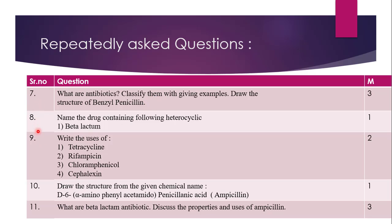Question 8 is: Name the drug containing the following heterocycle. The heterocycle is the beta-lactam ring. So, beta-lactam ring-containing antibiotics you are supposed to name. That question carries one mark. The beta-lactam antibiotics are like Penicillin, Cephalosporins, etc., which contain the beta-lactam ring.